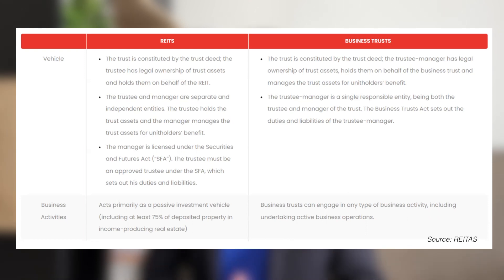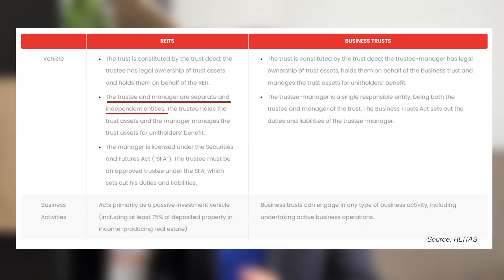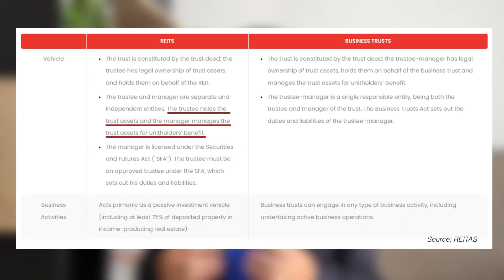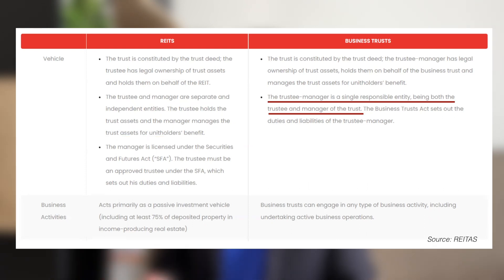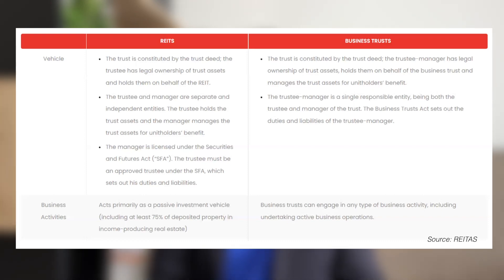I get this comparison from a website which gives a very clear differentiation between what is a REIT and what is a business trust. First, both REIT and business trust are constituted by the trust deed. However, for the REIT, the trustee and the manager are separate and independent entities — the trustees hold the trust asset and the managers manage the trust asset for the unit holders' benefits. But for a business trust, the trustee and the manager is a single responsible entity, meaning the business trust manager is also the trustee for the unit holders. So this is the key difference between a business trust and a REIT.